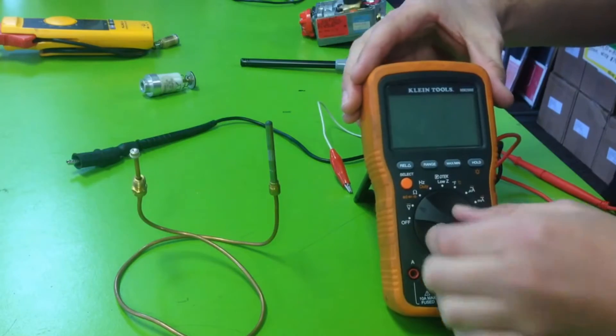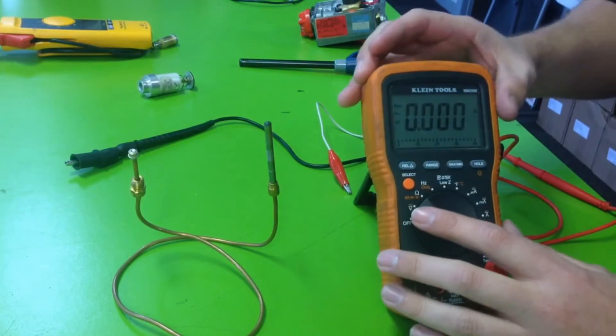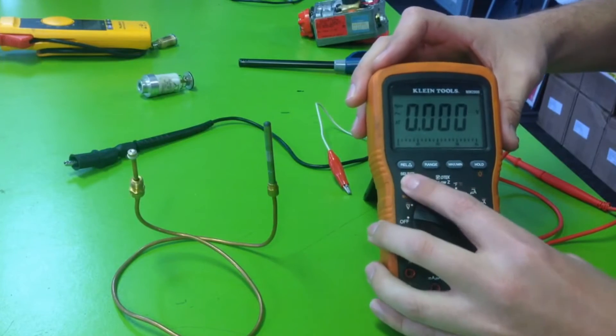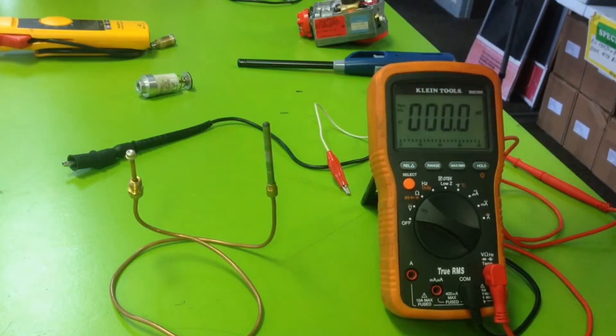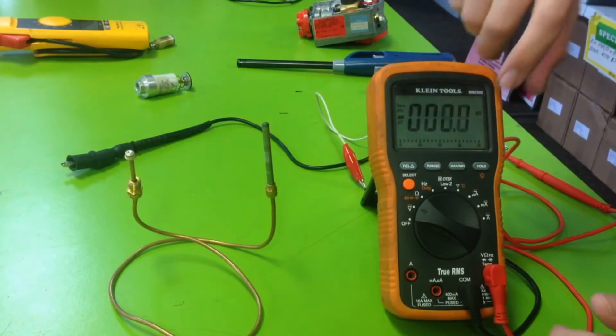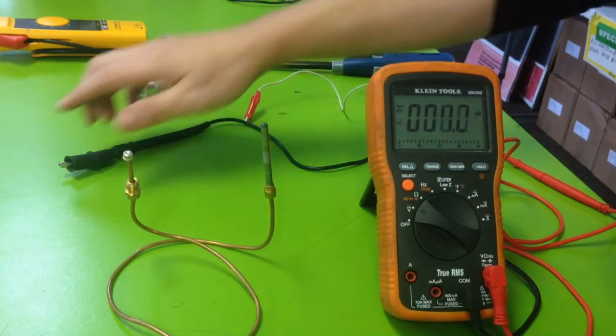So the first thing you want to do is go to your volt setting and you want to be on DC millivolts. I'm going to click that and you can see the symbol changed to DC, and it says MV right there - it's millivolts, not milliamps.